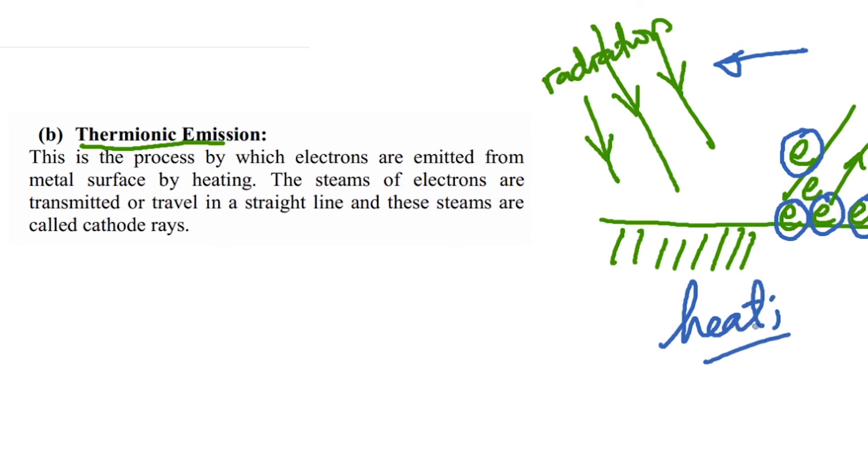So sometimes you can heat a metal and you heat it high enough to the point that these electrons are able to detach from the nuclear attraction and then they are emitted. When that happens, that is what we call thermionic emission.